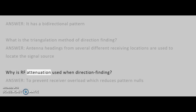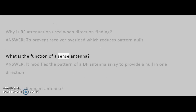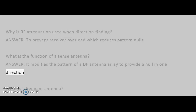Why is RF attenuation used when direction finding? Answer: To prevent receiver overload, which reduces pattern nulls. What is the function of a sense antenna? Answer: It modifies the pattern of a DF antenna array to provide a null in one direction.